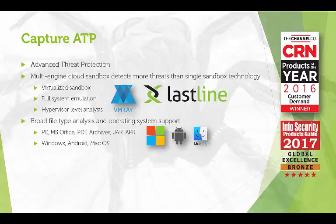It supports broad file types — executables, Office, PDFs, Archives, JAR, and APK files — and also multiple OSs. Files that are not known and do not have an existing hash can be blocked until the Capture Cloud determines if the file is good or malicious. It only works for GUI-based applications, like downloading a PDF from a website. Things in the background can obviously be blocked until a verdict is reached, but the user won't be notified — it would be something caught in the logs.